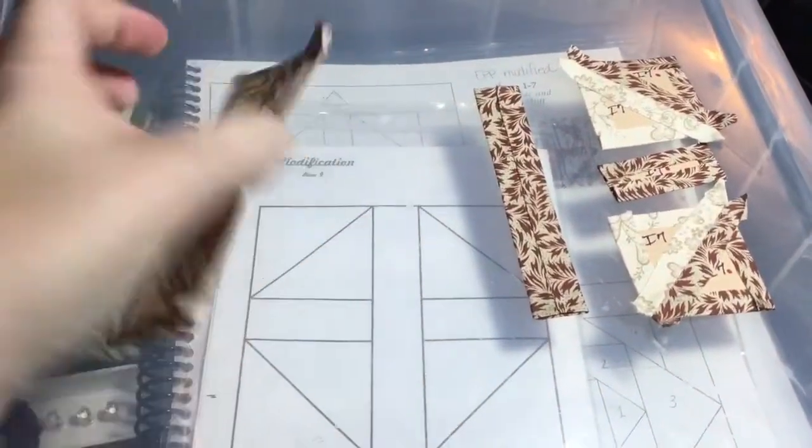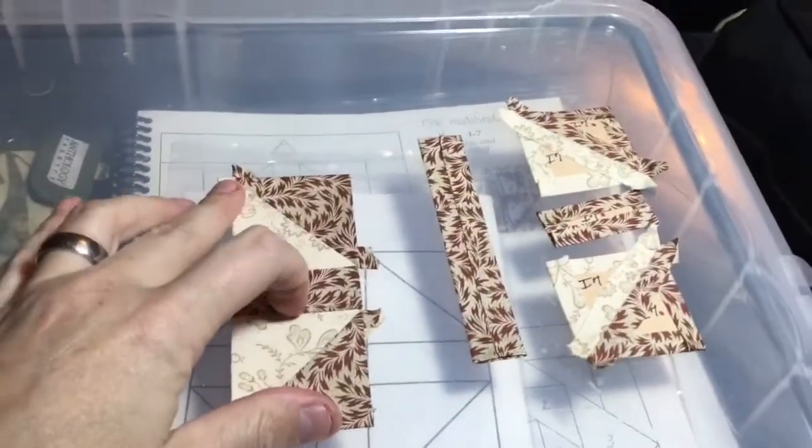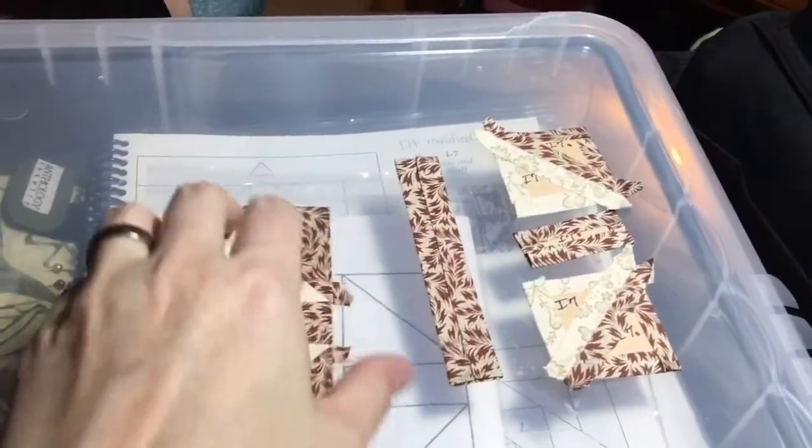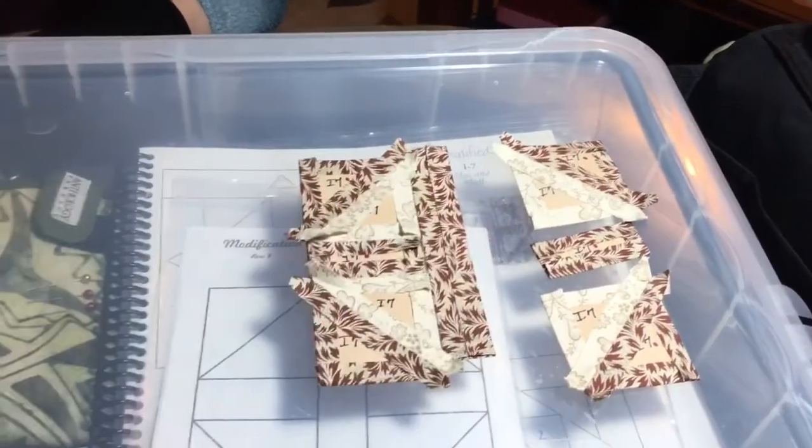So I've got this half of the block done, I just got to make another unit with a mirror image like this, and then I'm going to attach it to this and connect my block.